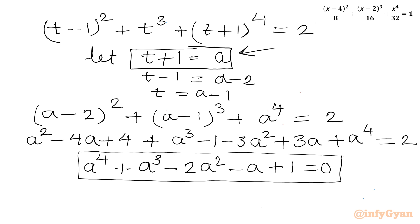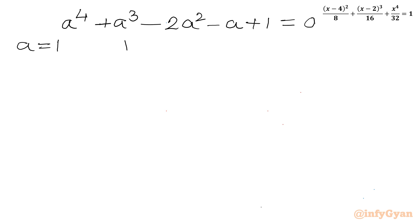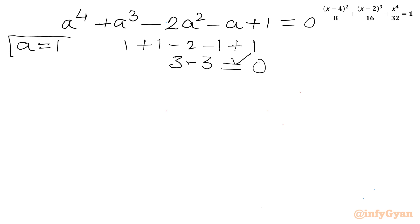Remember that a = t + 1. If I add all the coefficients — plugging in a = 1: 1 + 1 - 2 - 1 + 1 = 0 — so a = 1 is a root of this quartic equation.